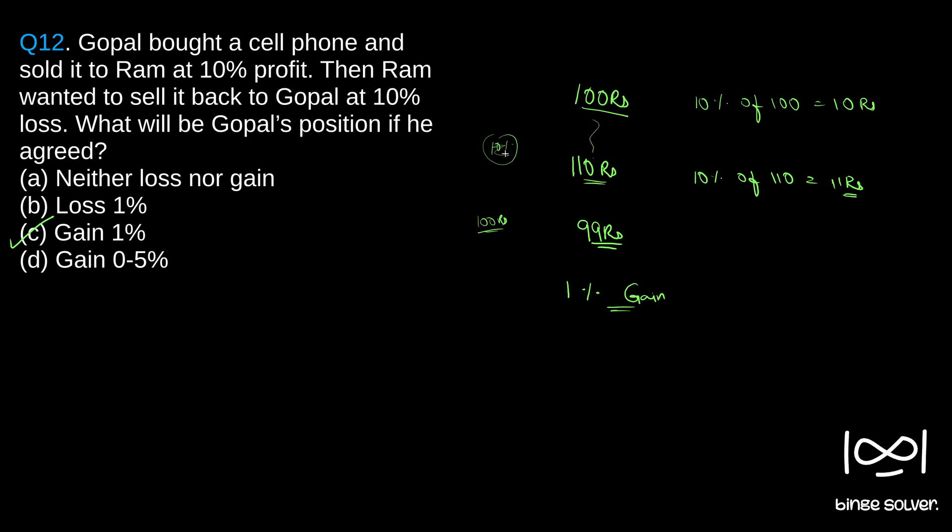One could think he got 10 rupees gain. Now he is getting a 100 rupees phone for 99 rupees. That means again 1 rupee gain. So 10 plus 1, 11 rupee gain in total.